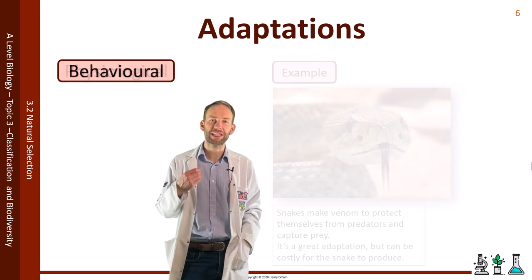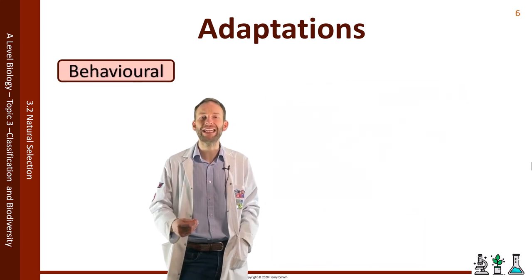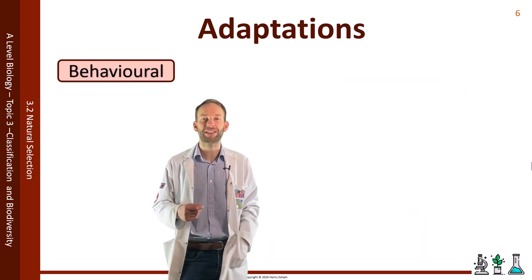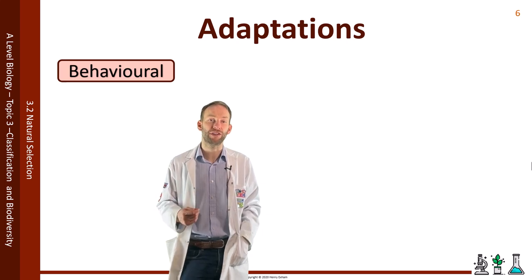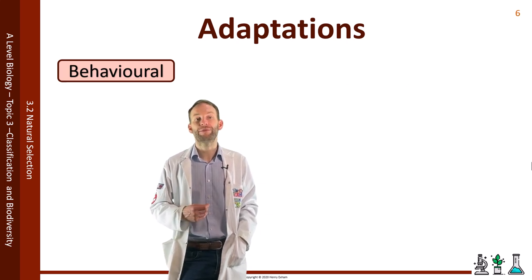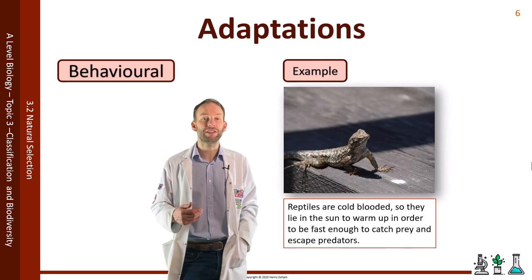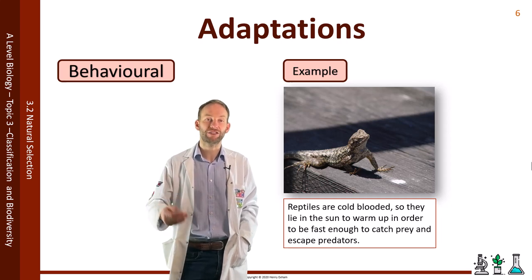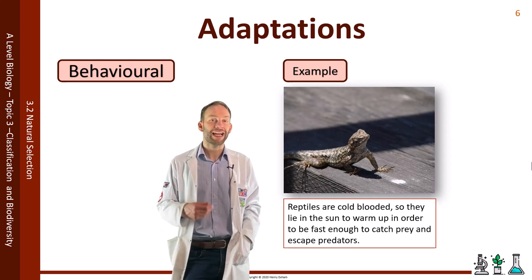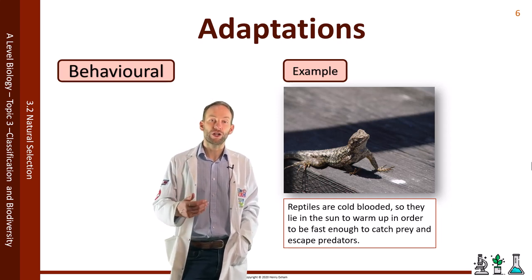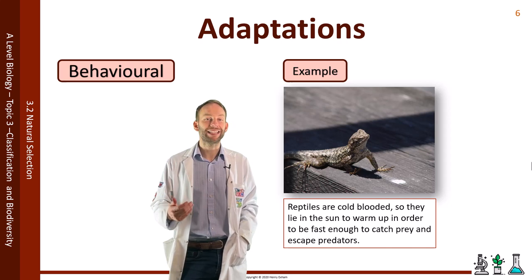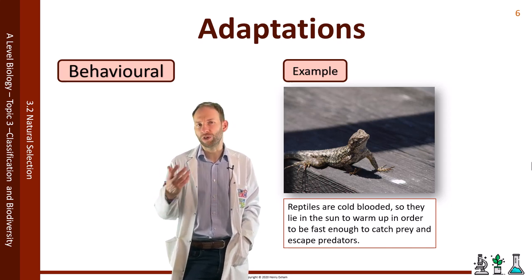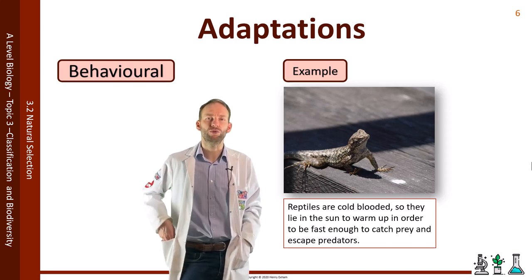Behavioural adaptations are specific types of behaviour that make organisms better adapted to their surroundings and more likely to survive. For example, reptiles are cold-blooded so they lie in the sun to warm up in order to be fast enough to catch their prey and escape predators. Other examples include mating rituals, using tools, migration, or working in social groups.